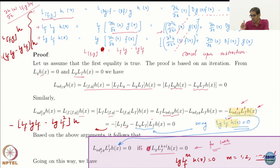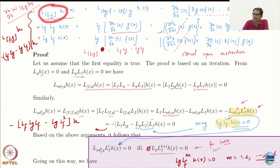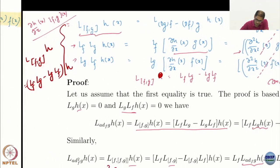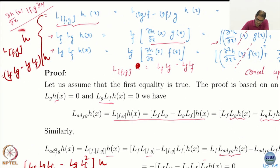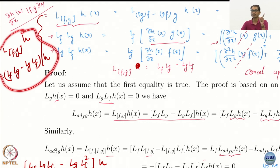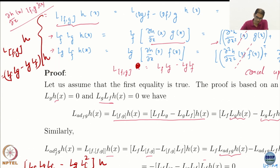We prove one key result and that proves all of this. The claim is that the Lie derivative with respect to the bracket [f, g] applied to h is the same as Lf(Lg h) − Lg(Lf h).